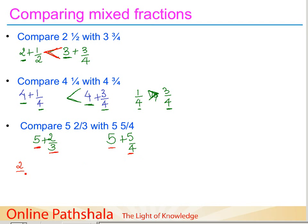We have to compare two by three versus five by four. These are unlike fractions with different denominators, so we use the LCM method to find the LCM and convert these fractions to ones whose denominator equals the LCM. The LCM of three and four is twelve.